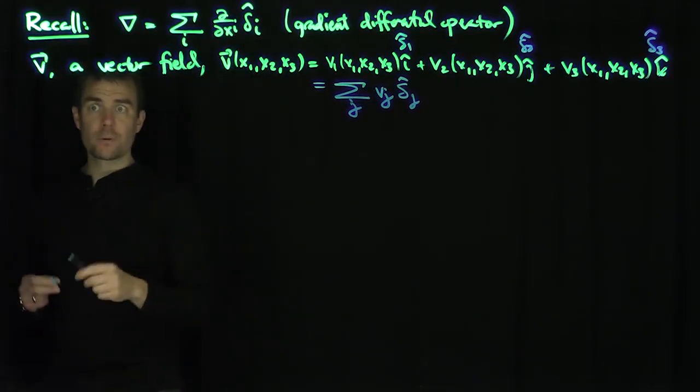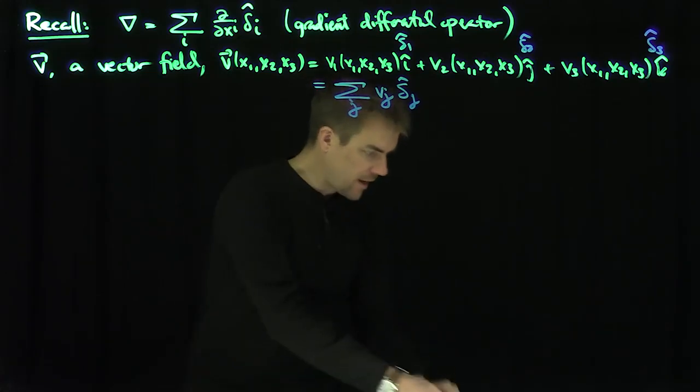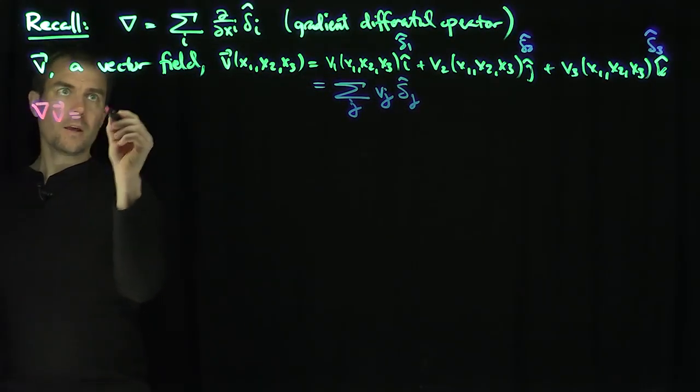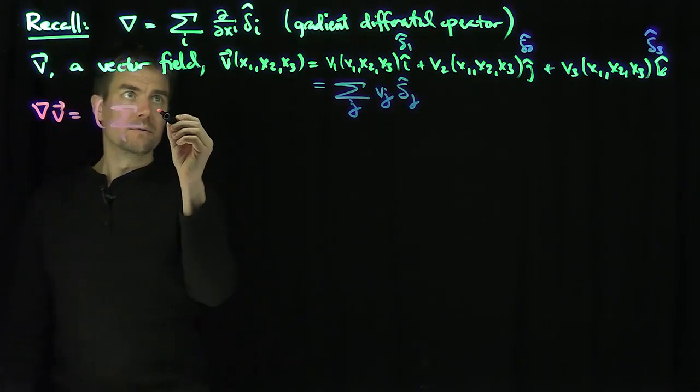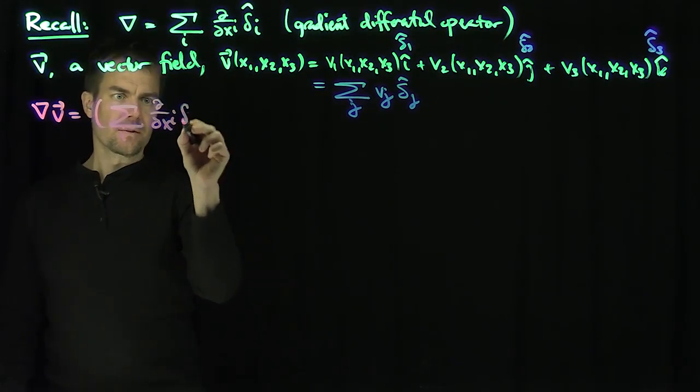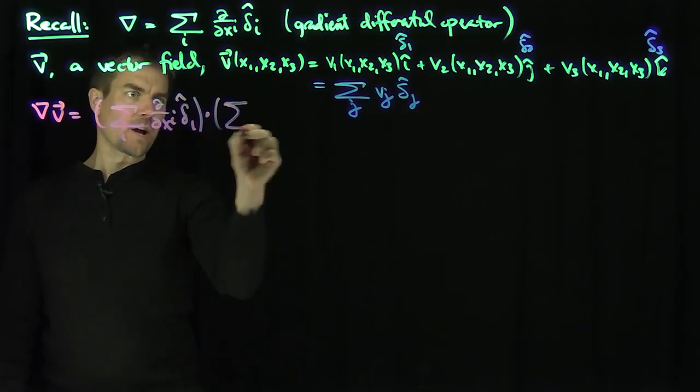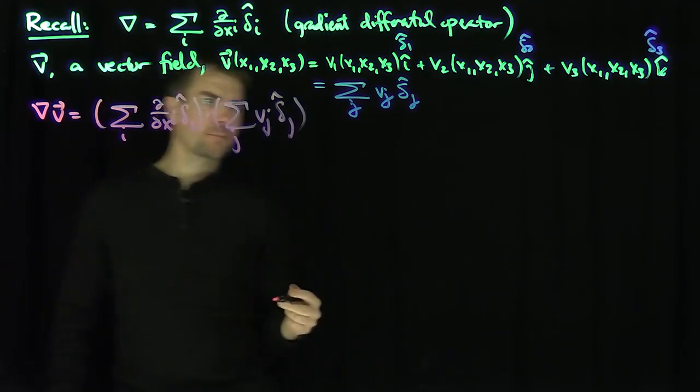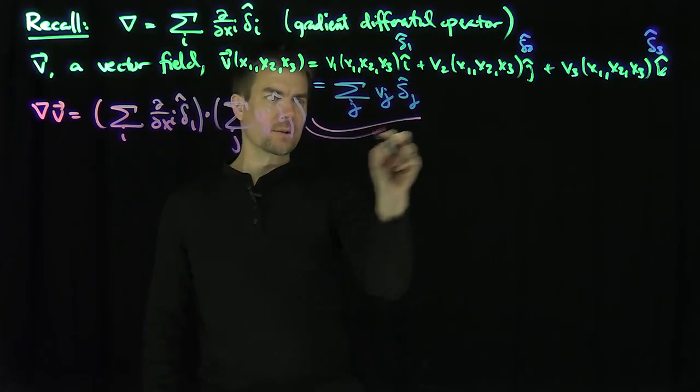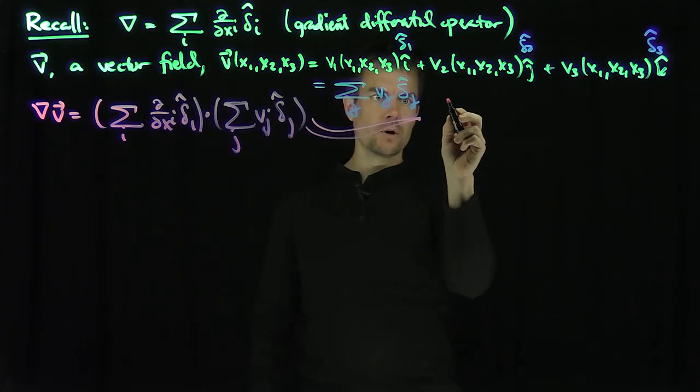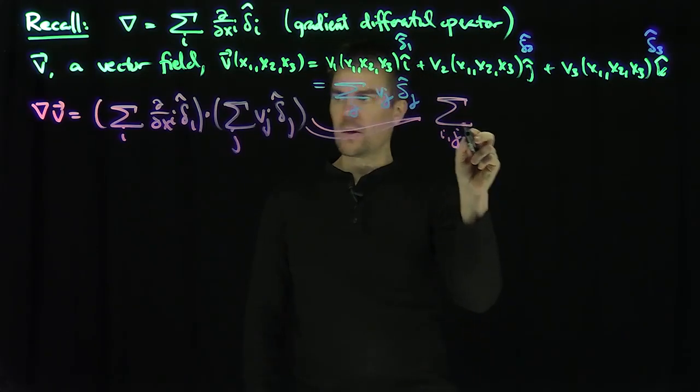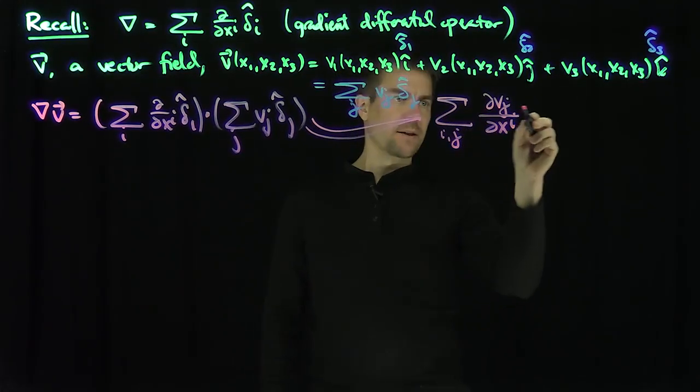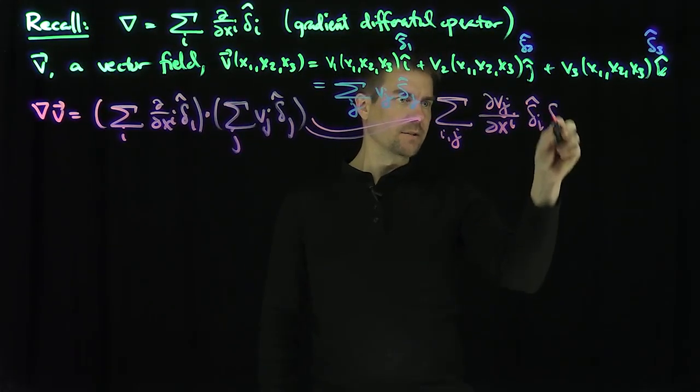That's what vector fields look like, so now I can formally do the gradient of this vector field. Define gradient of V. It's going to be the sum over i of d by dxi delta i hat dot the sum over j Vj delta j hat. This expression is equal to the sum over i and j of partial Vj partial xi delta i hat delta j hat.